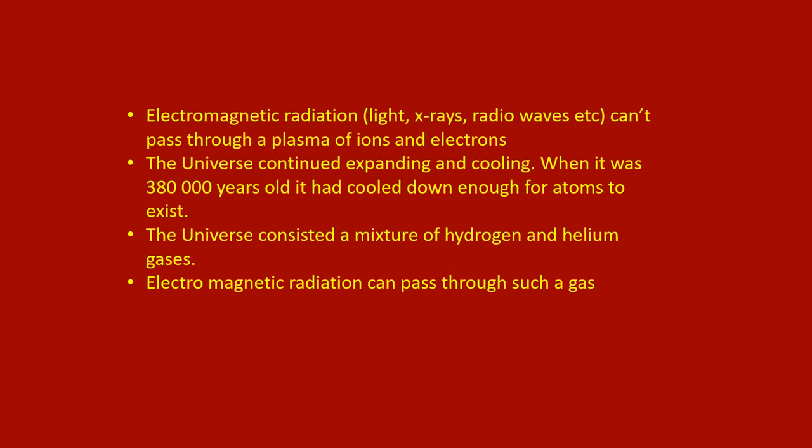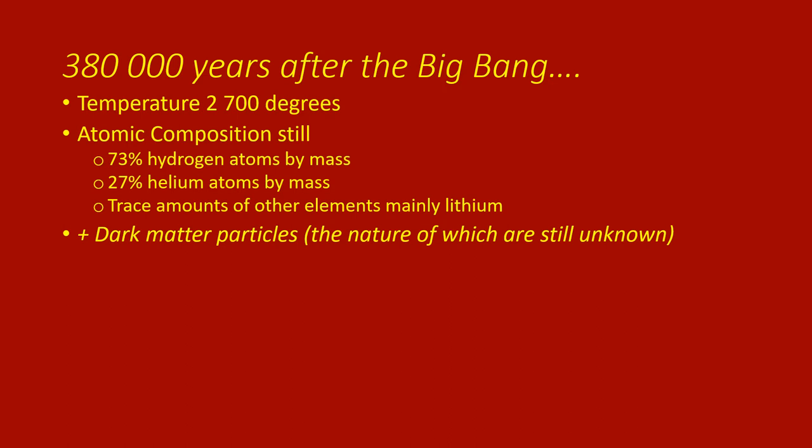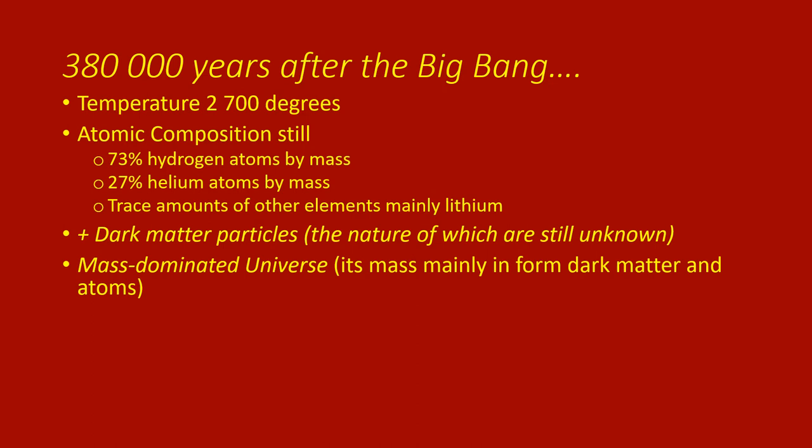So if you look at the universe when it was 380,000 years old, it had a temperature of 2,700 degrees. Its atomic makeup was still 73% hydrogen atoms, 27% helium atoms, trace amounts of other elements like lithium, and dark matter particles, the nature of which we still don't know.